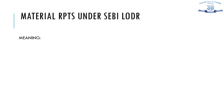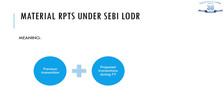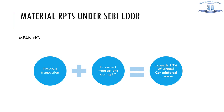For material RPT under SEBI LODR, a material related party transaction shall be such which, together with previous transactions and the proposed transactions during a financial year, exceeds 10% of the annual consolidated turnover of the listed entity. For transactions involving payment made for brand usage or royalty, the limit is lower at 2% of the annual consolidated turnover of the listed entity. This amendment has been inserted via the SEBI LODR Amendment Regulations 2018, which is enforceable in separate tranches.